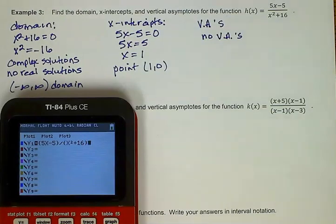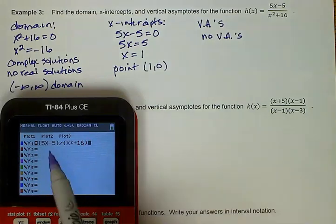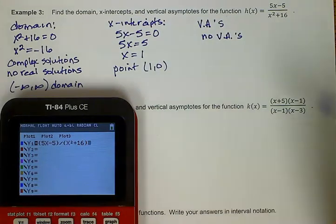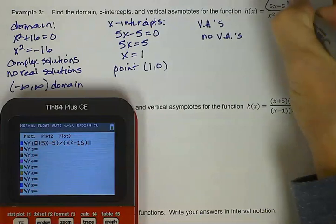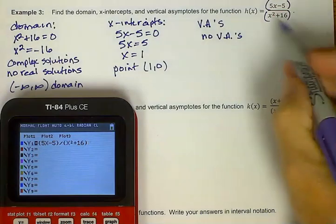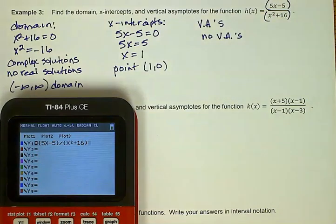Now let's look at the graph for this one. Notice when I put this in my calculator, I put parentheses around both the numerator and the denominator, because they both had two terms. If I hadn't done that, I wouldn't be getting the right graph from this.